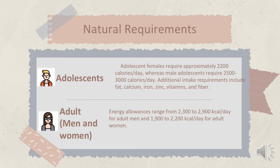Next is for adult men and women. Energy allowances range from 2,300 to 2,900 kilocalories per day for adult men and 1,900 to 2,200 kilocalories per day for adult women.